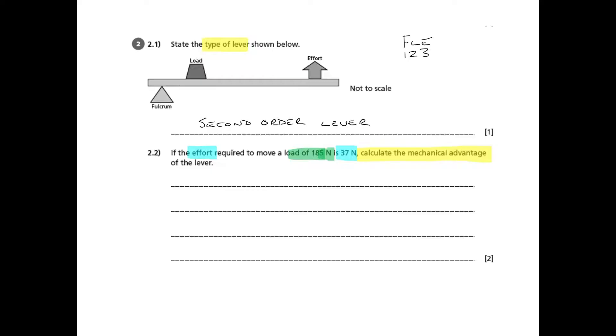Moving on to the second part of the question, we're asked to calculate the mechanical advantage of the lever and it provides some information. Now the reason I've highlighted these slightly separately is that you can see that the load is 185 and the effort is 37 newtons. The way that the question is laid out or written separates the two out, but I think it's important that you identify the two.